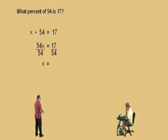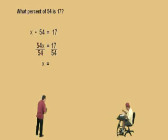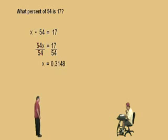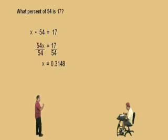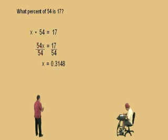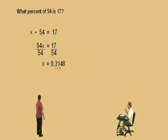We're going to write our answer as a decimal first. What is it, Charlie? 0.314. And remember, we were asked to find a percent because the question said 'what percent.' That's why we're going from a fraction to a decimal and now to a percent. How do we change a decimal to a percent, Charlie? That's right. And there's our answer, 31.4%.